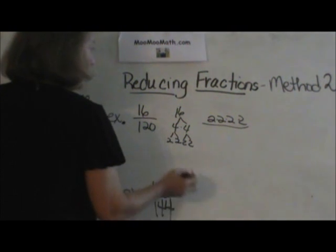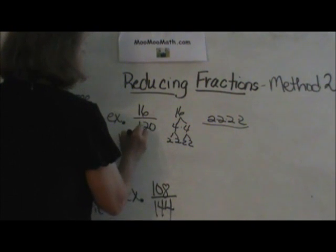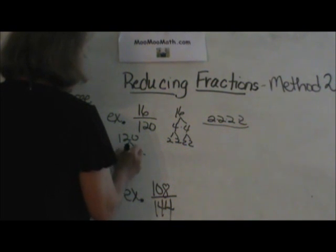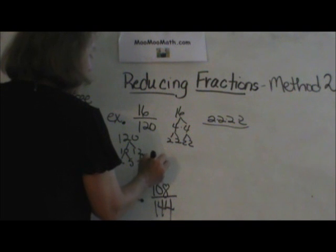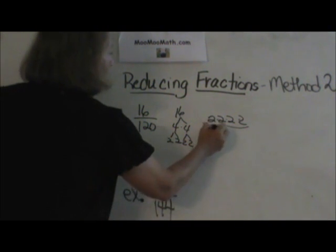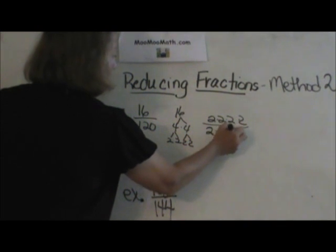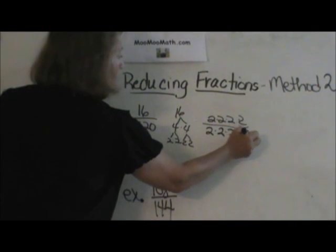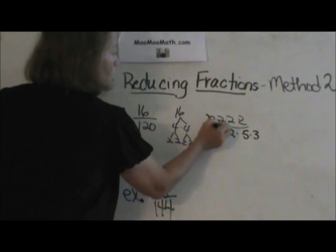Then I'm going to take 120 and I'm going to make a factor tree. 10 times 12, 2 times 5, 2 times 6, and 6 is 2 times 3. So I have 2 times 2 times 2 times 5 times 3. Prime factorization.